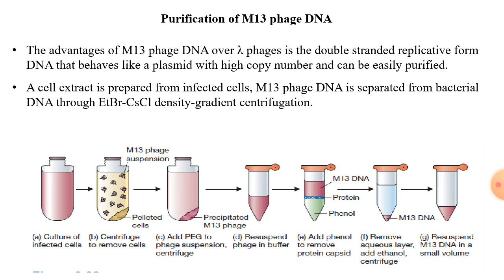The suspension is then subjected to addition of polyethylene glycol, wherein the phage pellet is precipitated and separated. This is then subjected to density gradient centrifugation, obtaining DNA along with protein. The protein forms a separate band and the DNA forms its own separate band. The DNA obtained is further treated with phenol or protease to remove the protein coat, thus obtaining the pure form of M13 DNA in the final step, which is used for further experiments.